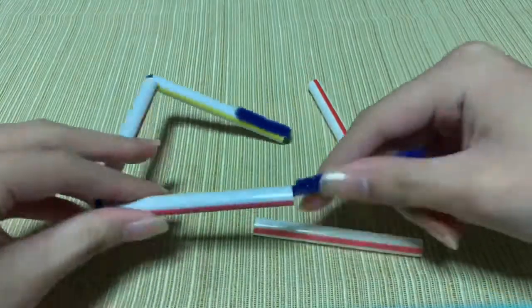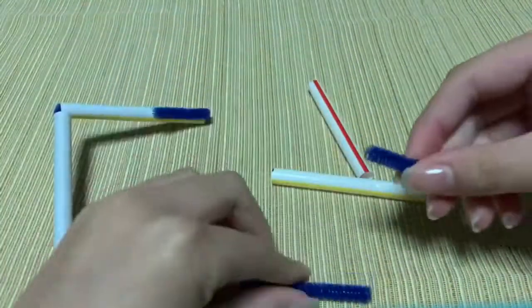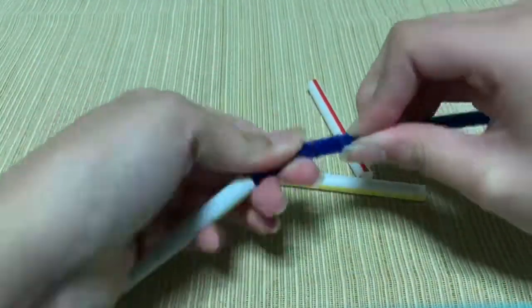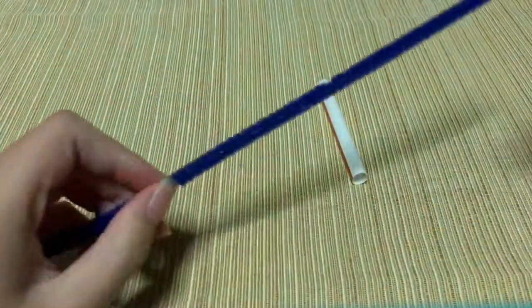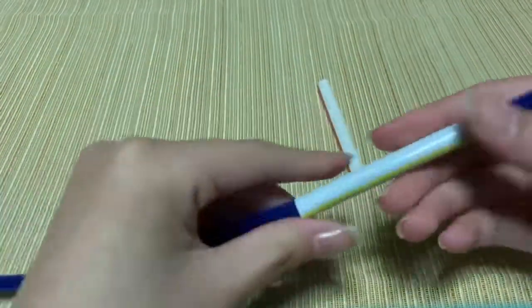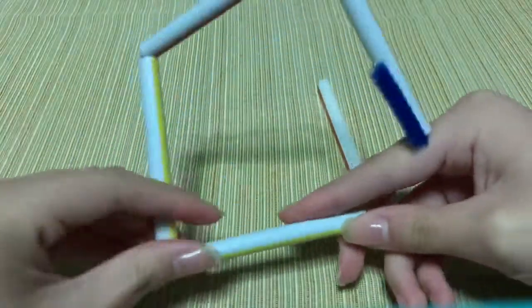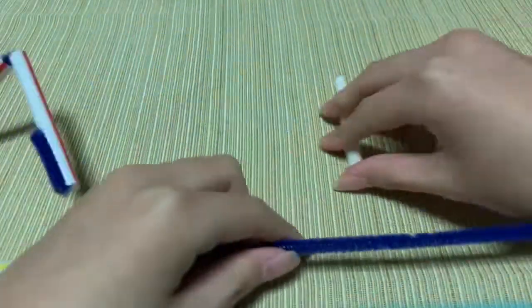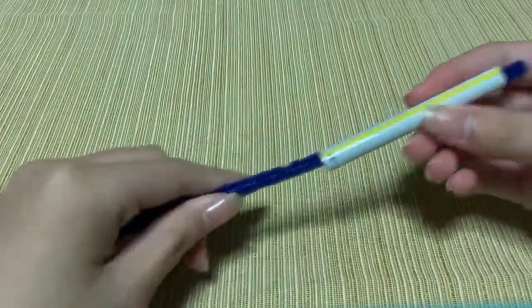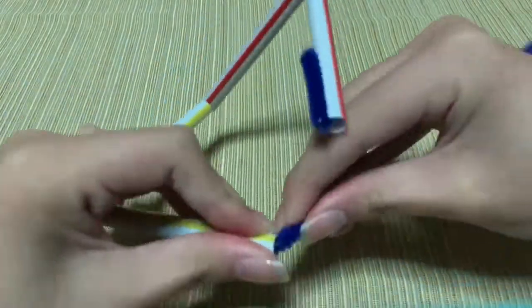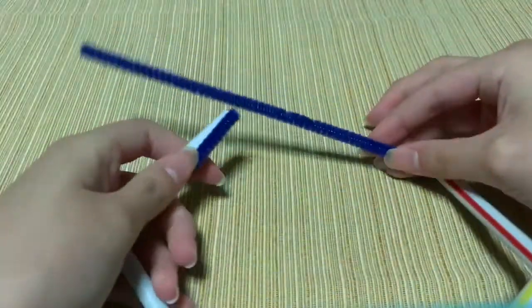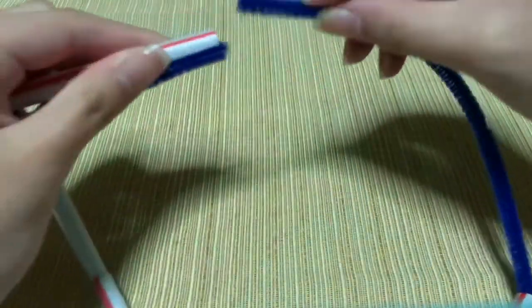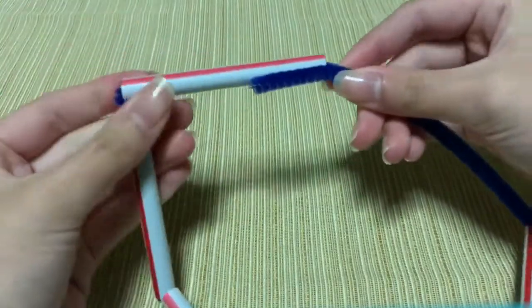At this point, you'll need to attach another pipe cleaner to extend the length. Just twist them together and push tightly so no bits are pointing out. Once you've formed this pentagon shape and are back to your original strut, take the initial bent piece and thread it through the last strut, while pushing the open end into the original strut like so.